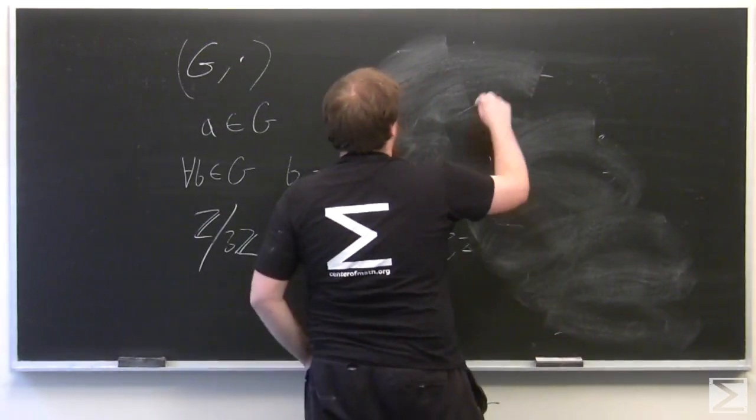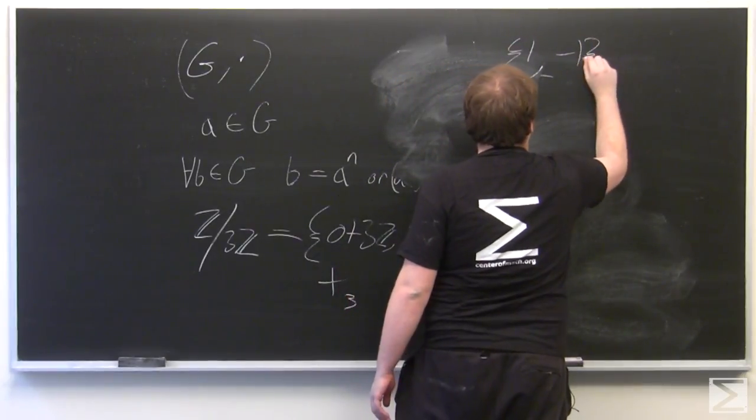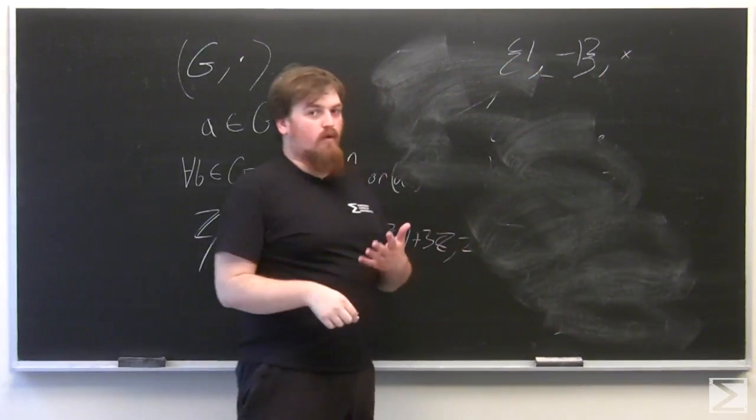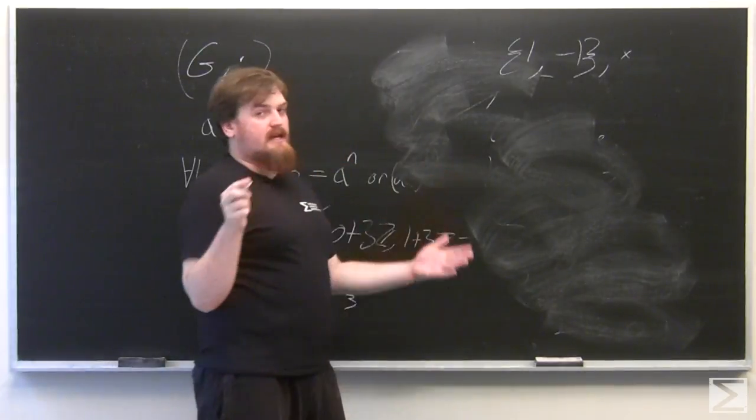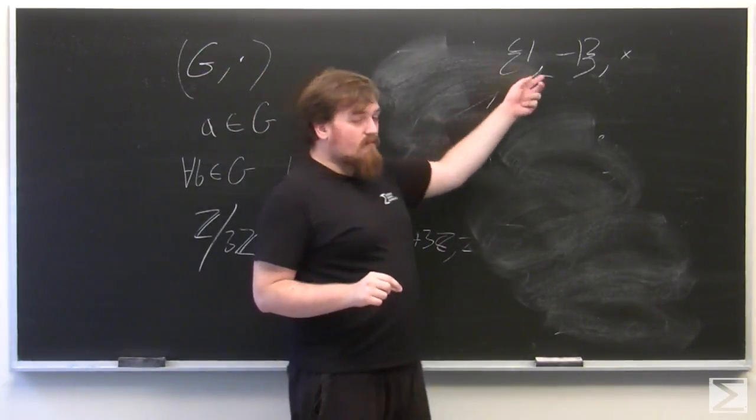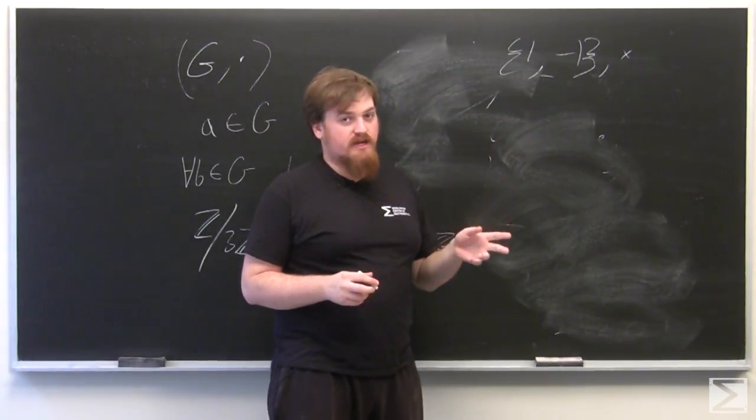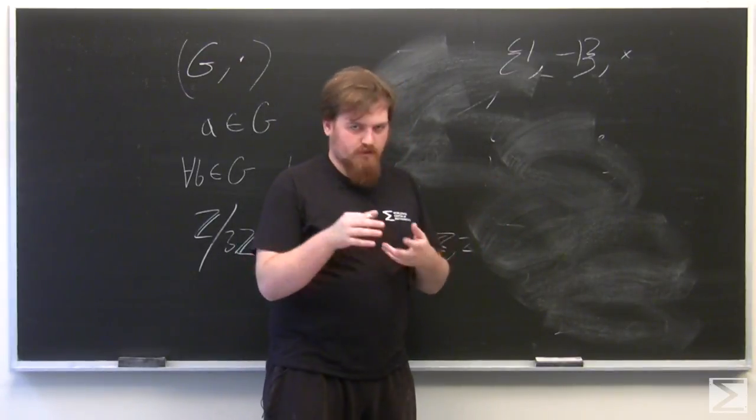For example, the subgroup of the rationals or reals under multiplication, 1 and negative 1 under multiplication, that's a cyclic group of order 2, where 1 is the identity, and negative 1 times negative 1 is 1. So this is going to be isomorphic to Z modulo 2Z, which looks like 0 plus 1 under addition, which is called addition modulo 2, where 1 plus 1 is 0 instead of 2.